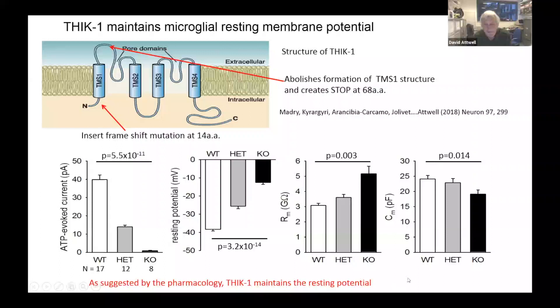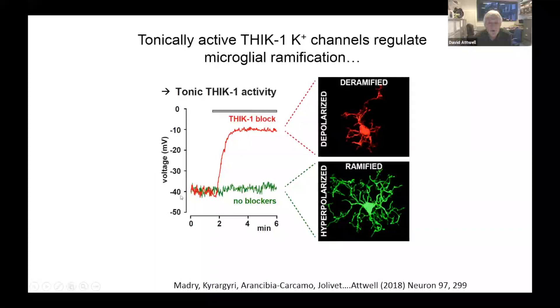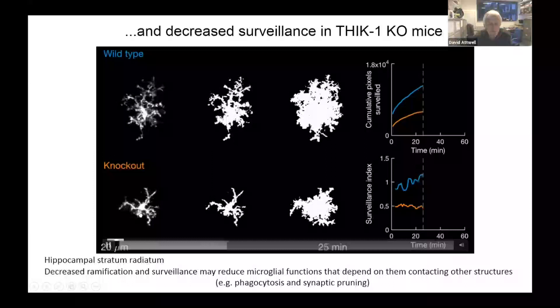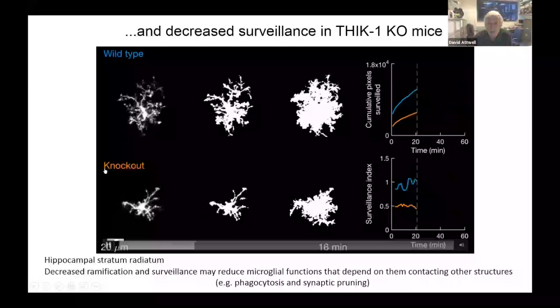THIK1 maintains resting potential: when blocked, the normally hyperpolarized, highly ramified microglia become deramified with simpler morphology. Looking at brain scanning by wild-type versus knockout microglia — binarizing the image and summing frames — wild-type microglia survey roughly twice as many pixels as knockout microglia.